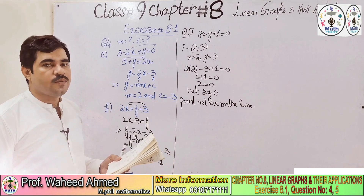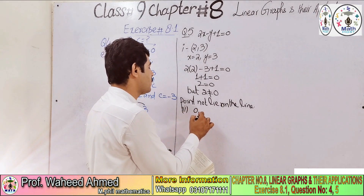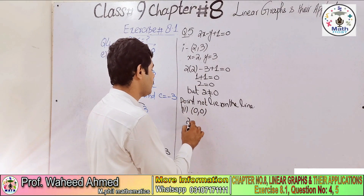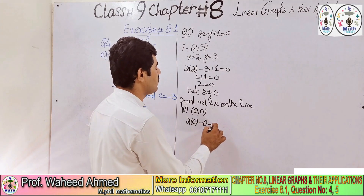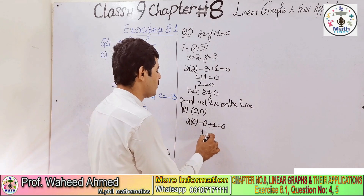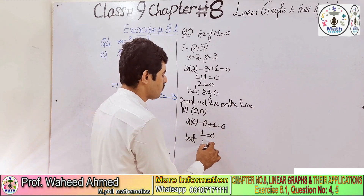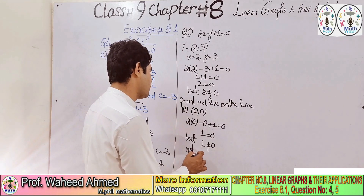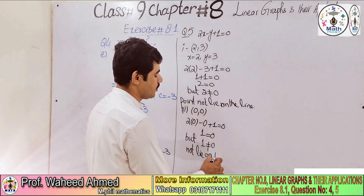The second point is (0, 0), so x = 0 and y = 0. Applying to the equation: 2 × 0 - 0 + 1 = 0, which gives 0 + 1 = 0, meaning 1 = 0. Since 1 is not equal to 0, the point (0, 0) does not lie on the line.